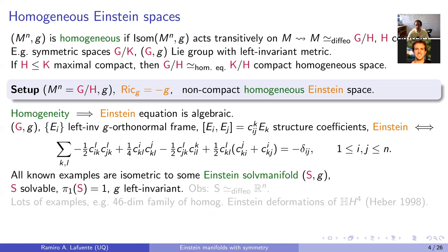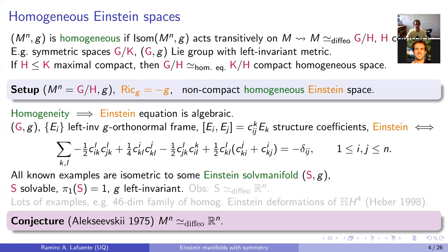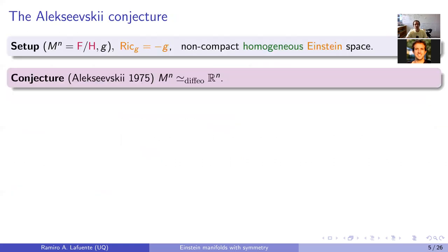An interesting property they all share is that they are simply connected solvmanifolds, hence all diffeomorphic to Euclidean space R^n. This leads to a long-standing open question about Einstein homogeneous spaces with negative constant, due to Alekseevsky in the 70s: he conjectured that such an M must be diffeomorphic to Euclidean space — not isometric, just diffeomorphic. This conjecture is the focus of our recent preprint.